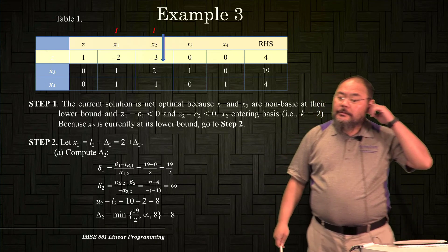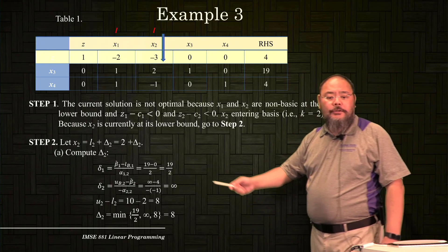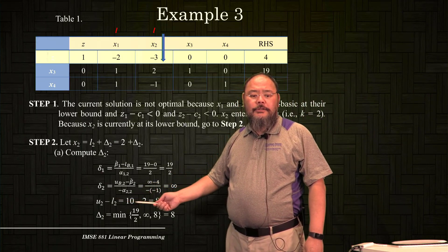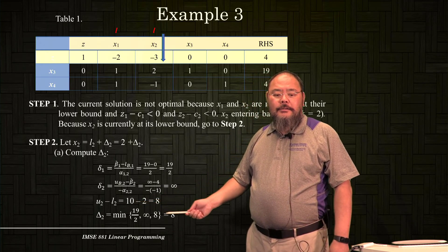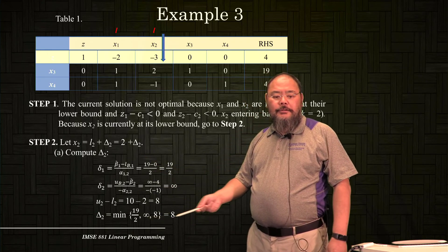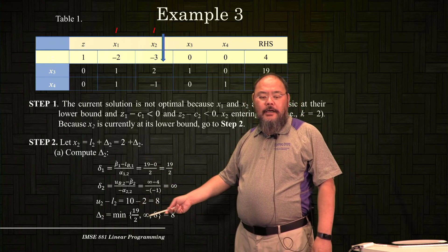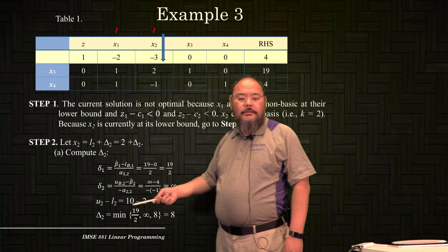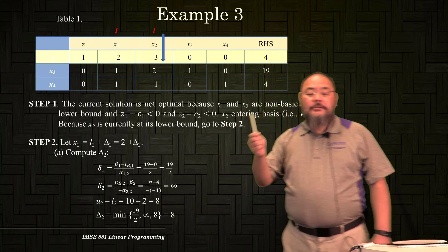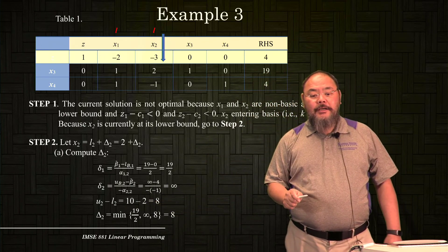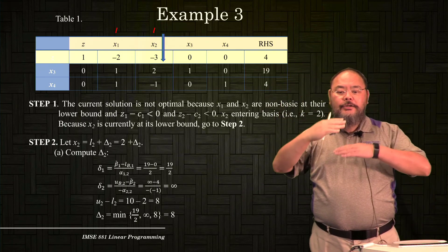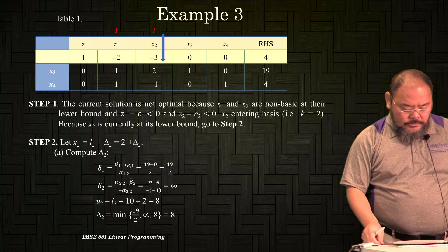So sigma1 equals 19/2 and sigma2 equals infinity. The upper minus lower bound, u2 minus l2, equals 10 minus 2, which equals 8. The minimum of 19/2, infinity, and 8 is 8. This means x2 will remain non-basic but moves from its current lower bound to its upper bound.